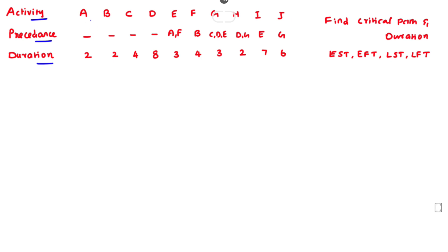For example, activity E should start after the completion of activities A and F. For activity J, it will start after the completion of activity G. Likewise, the precedence relationships are given for all activities. The corresponding durations are also given — activity A has a duration of 2 days, activity B also has a duration of 2 days, and likewise every activity has its own duration.